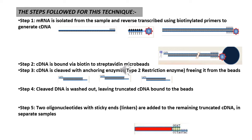The third step is where cDNA is cleaved with anchoring enzymes, which are Type II restriction enzymes. These enzymes cut at a specific sequence, freeing the cDNA from the beads. The cleaved DNA is washed out, leaving some DNA still bound to the beads. In the next step, two oligonucleotides with sticky ends, called linkers, are added to the remaining truncated cDNA in separate samples. These linkers are short oligonucleotide sequences added to the DNA bound to the streptavidin molecule.